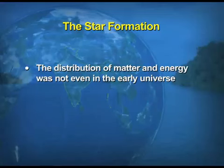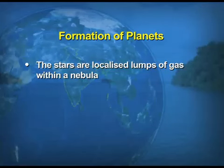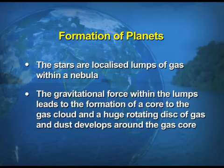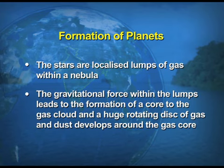The Big Bang theory also talks about the formation of the star — the formation of the present remnant, that is the sun itself. The distribution of matter and energy was not even in the early universe. In the first stage, stars are localized lumps of gas within a nebula. The gravitational force within the lumps leads to the formation of a core to the gas cloud, and a huge rotating disk of gas and dust develops around the gas core.